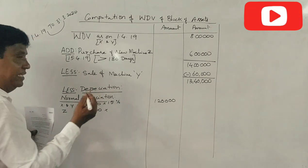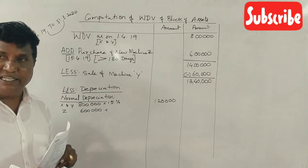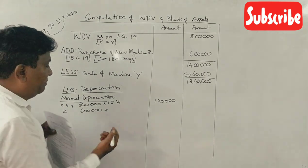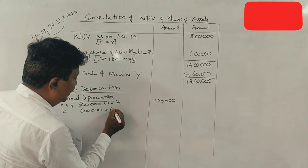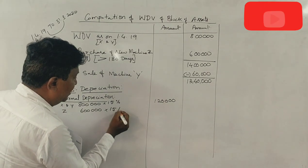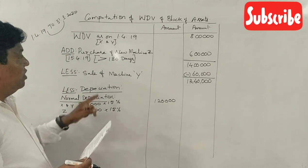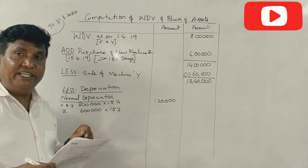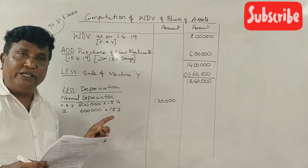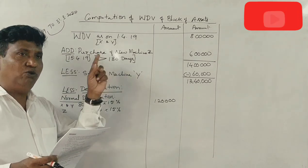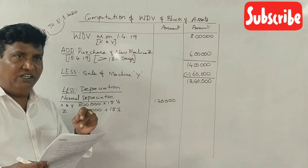6 lakhs — correct? The rate of depreciation is 15%. More than 180 days, so yes, 15% applies. More than 180 days use — correct.